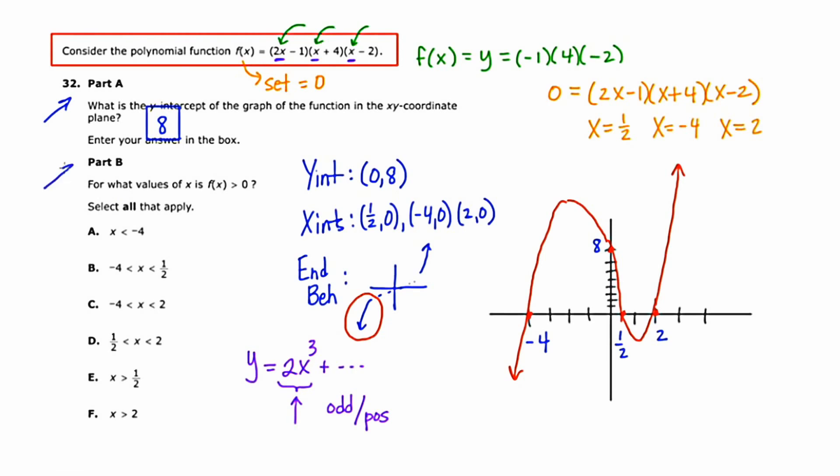Now, moving to Part B. Part B says, for what value of x is the function greater than 0? The greater than symbol means to me, above. So where is our graph above the line y = 0? Well, there are two places, and I'm going to shade that in here.